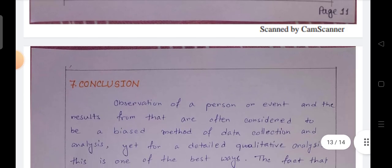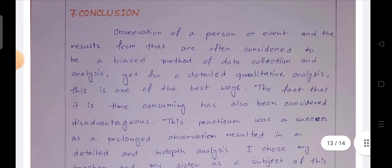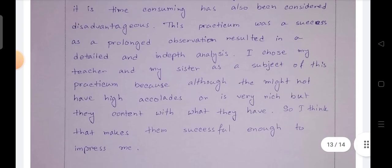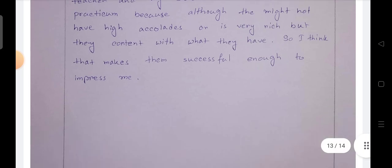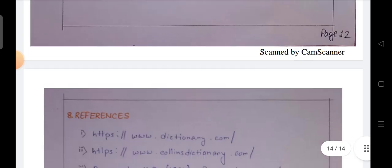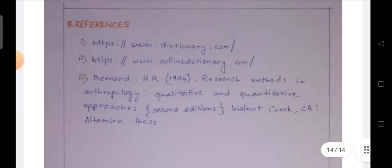Conclusion: observation of a person or event and the results from that are often considered to be a biased method of data collection and analysis. This practicum was a success as a prolonged observation resulted in a detailed and in-depth analysis. So I think that makes them successful enough to impress me. So here the conclusion part and the practicum is, last, references.